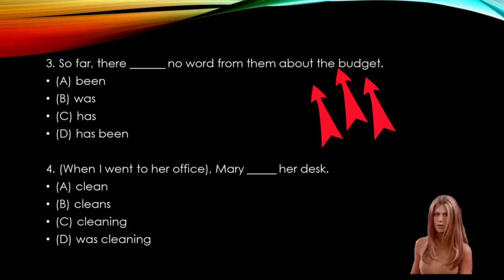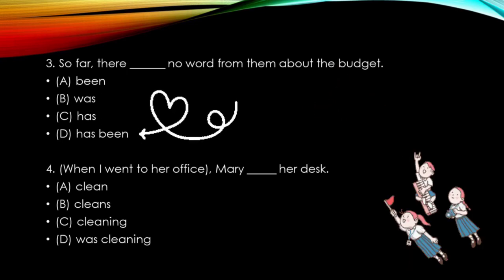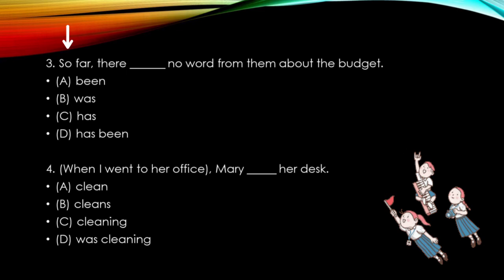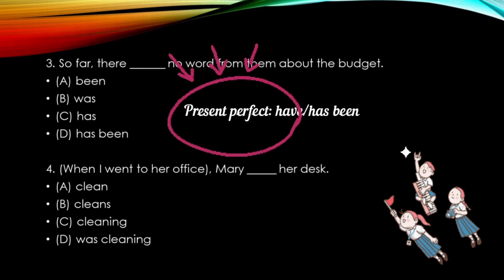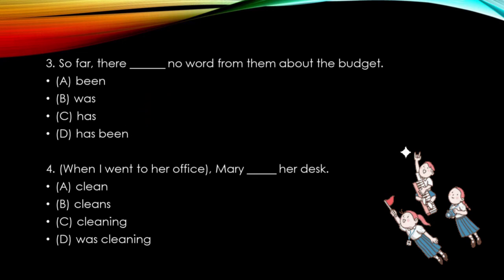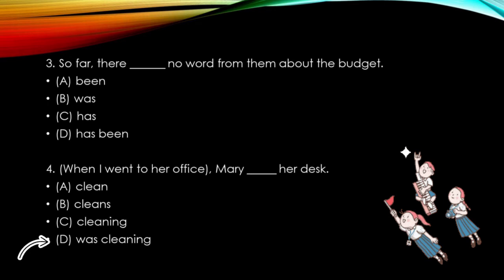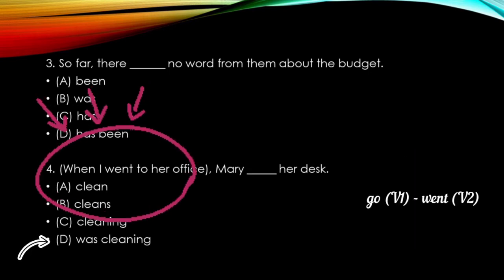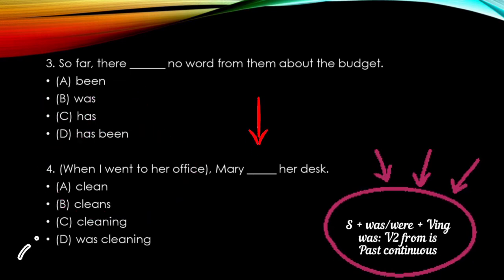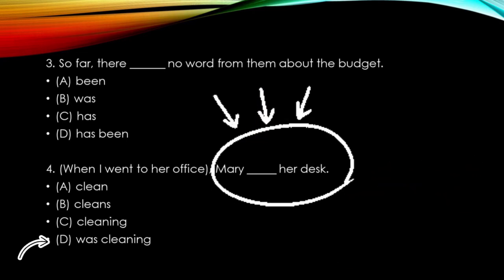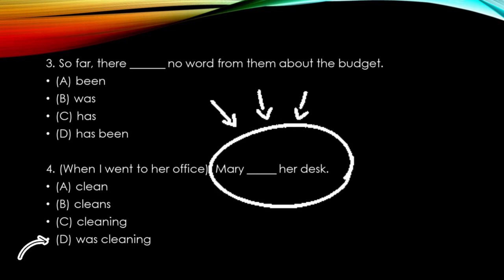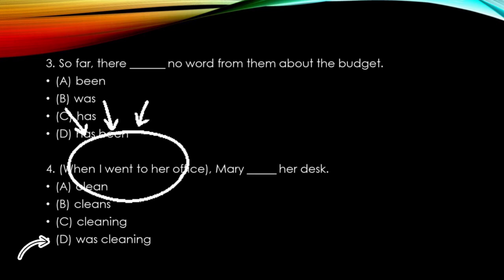Number 3: So far, there ___ no words from them about the budget. The answer is D: 'has been'. 'So far' diartikan 'sejauh ini', bermakna waktu dari masa lalu sampai dengan saat ini. Tense untuk menghubungkan masa lalu dengan masa sekarang adalah present perfect, so the answer is D: has been. Number 4: When I went to her office, Mary ___ her desk. The answer is D: 'was cleaning'. Keterangan pada kalimat itu adalah 'when I went to her office' yang menggunakan kata kerja bentuk kedua, oleh karena itu kata kerja untuk subject Mary juga harus dalam bentuk verb 2. Ada sebuah aktivitas panjang yaitu 'Mary was cleaning her desk' yang dipotong dengan sebuah aktivitas pendek yaitu 'when I went to her office'.